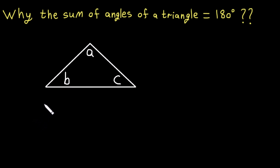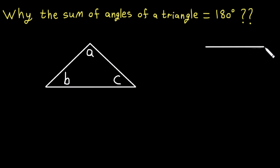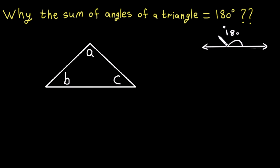First, we know that a straight line has an angle equal to 180 degrees. So this is the first piece of knowledge we will use.